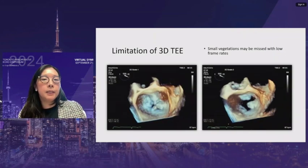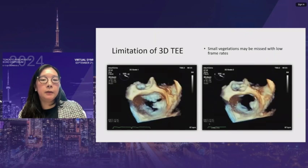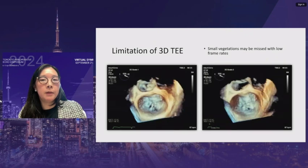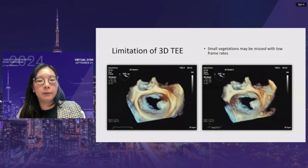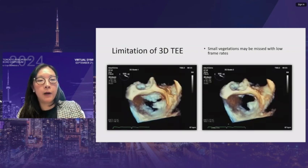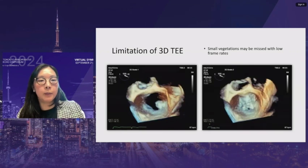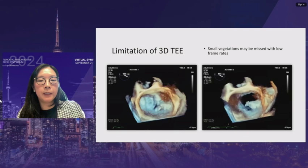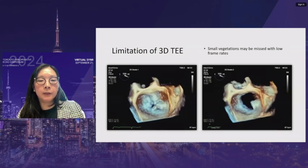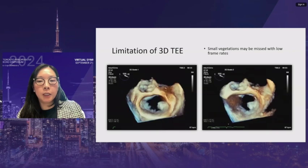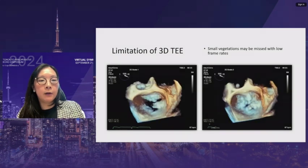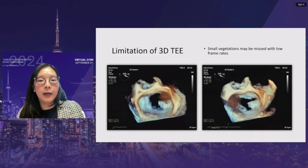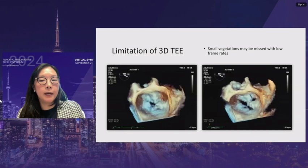3D echo should not be relied upon heavily to make the diagnosis of vegetations, because small vegetations may be missed due to low frame rate — the fast oscillating motion may not be captured. A TEE from the left atrial perspective shows a mass on the mitral annulus with a vegetation at its tip oscillating in the cavity. Comparing frames at 7 fps versus 15 fps, the fine mobility of the vegetation is much better seen at the higher frame rate.